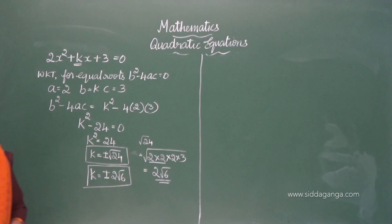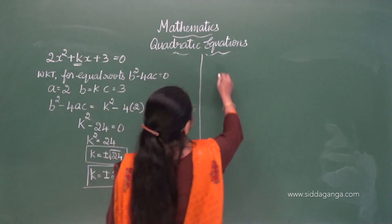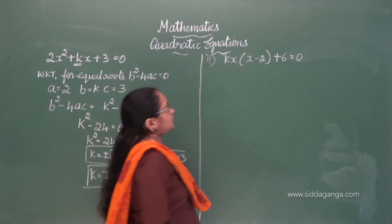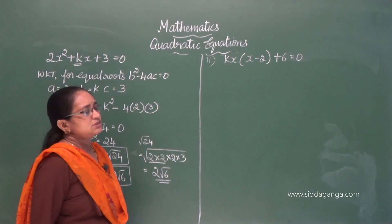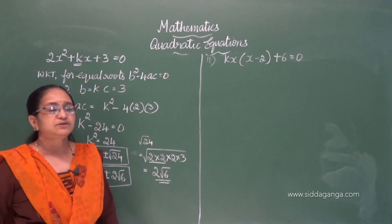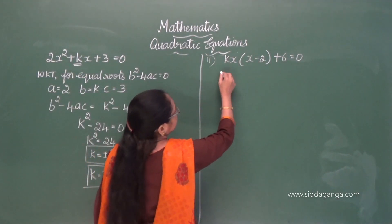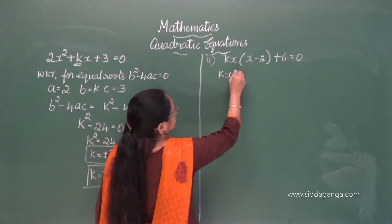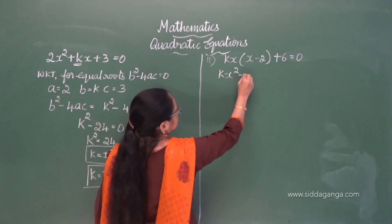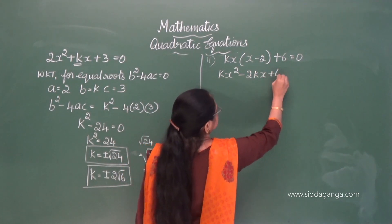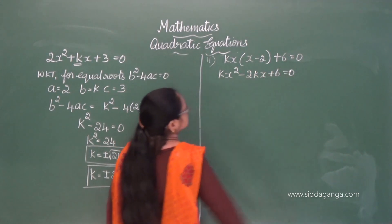The second problem: kx(x − 2) + 6 = 0. When the equation is given like this, try to convert it into standard form. It is not in standard form, so simplify it. This becomes kx² − 2kx + 6 = 0.